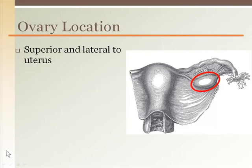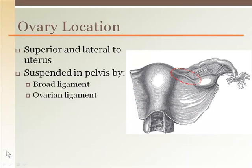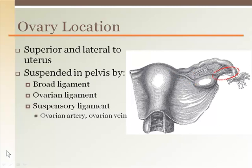The ovaries are above and to the side of the uterus, suspended by ligaments which hold them in place within the pelvic cavity. The broad ligament is wide and flat and extends from the uterus to the ovary and to the abdominal pelvic wall. The ovarian ligament, a rope-like ligament, extends from the medial ovary to the uterus. Suspensory ligaments hold up the ovaries and fallopian tubes to the pelvic wall.